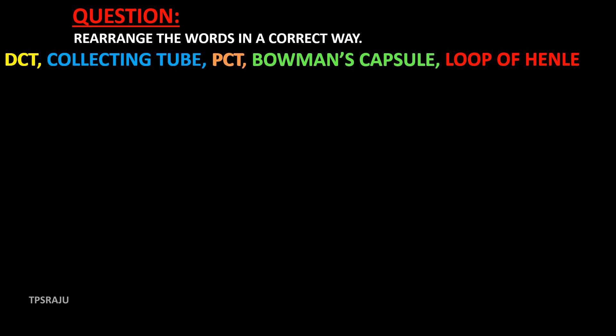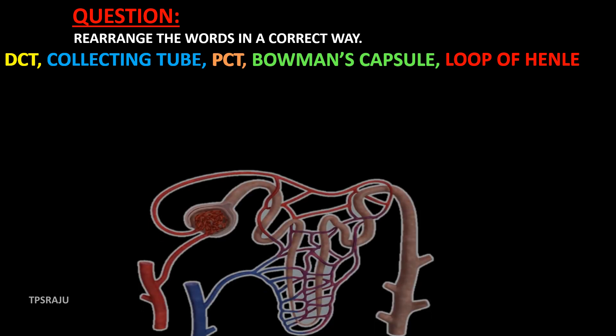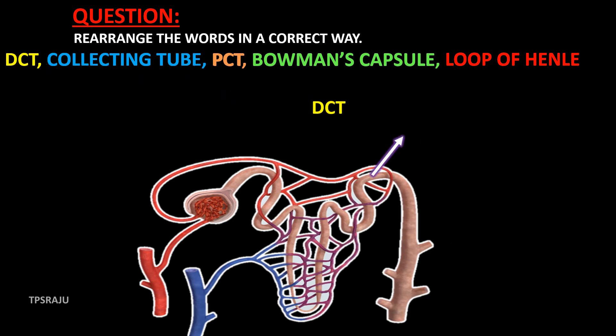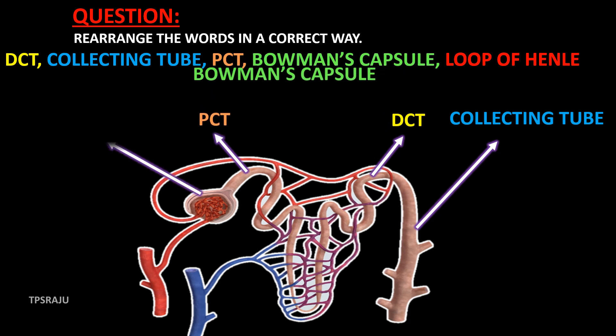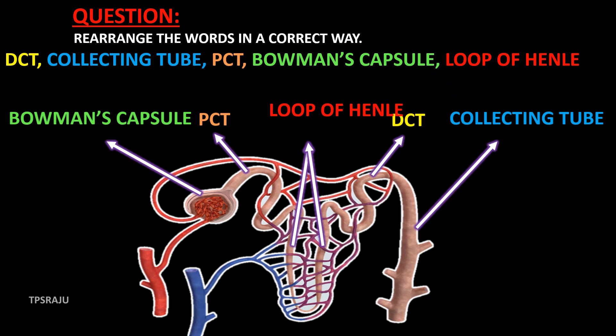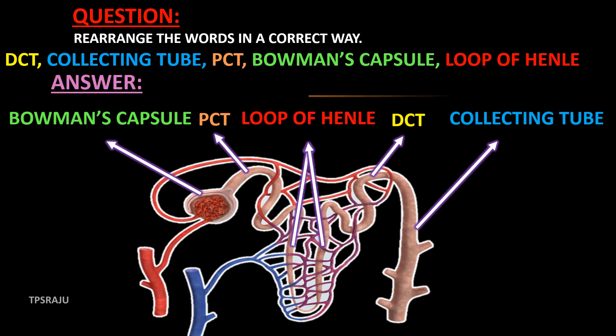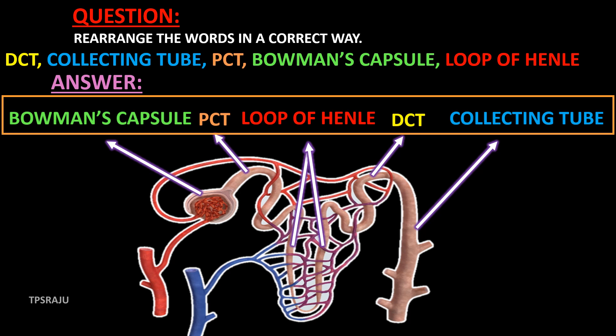Here, there is a question. Rearrange the words in the correct way. The words are DCT, collecting tube, PCT, Bowman's capsule and loop of Henle. These words belong to the nephron. Observe here. The answer is Bowman's capsule, PCT, loop of Henle, DCT and collecting tube.